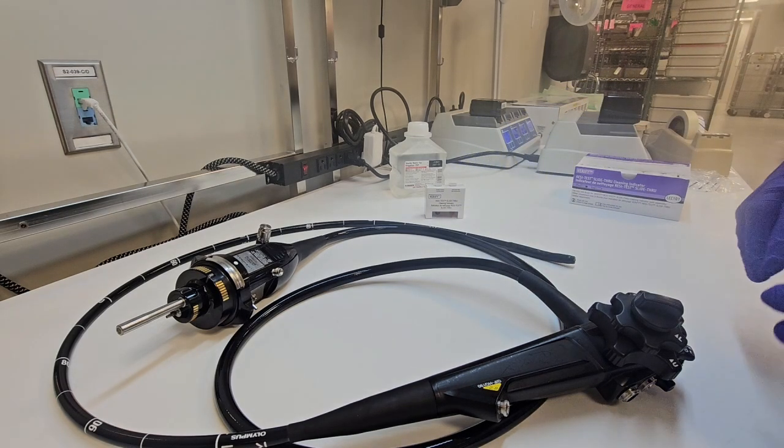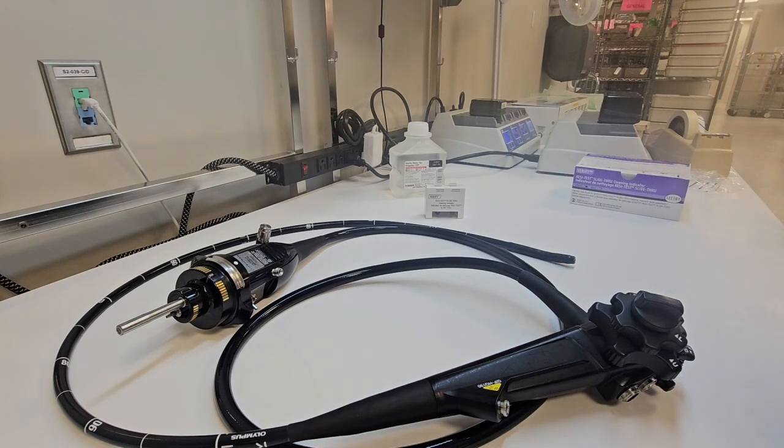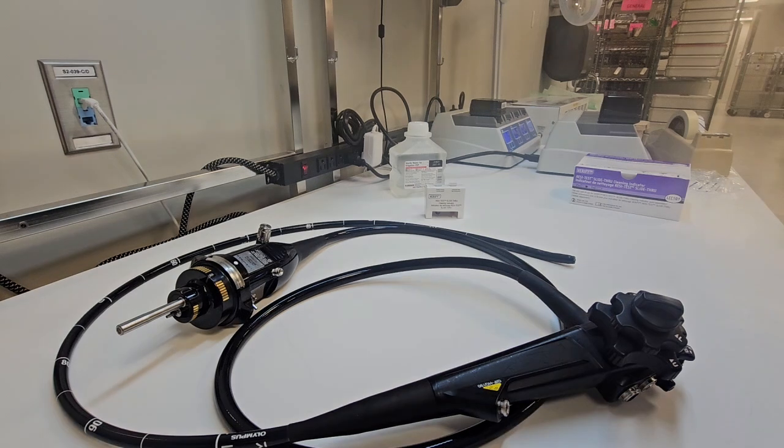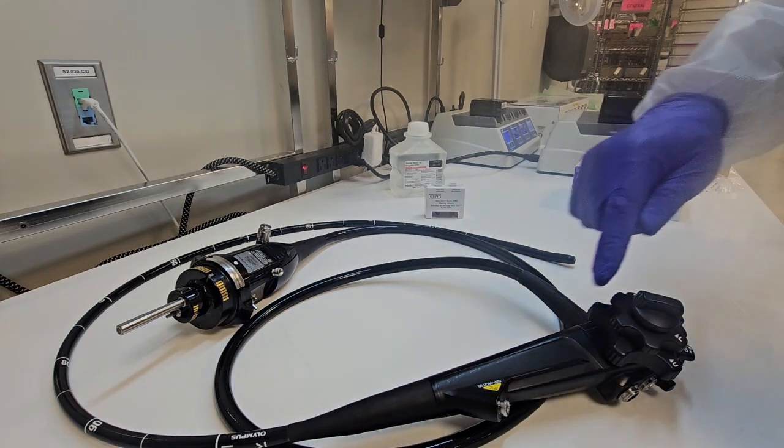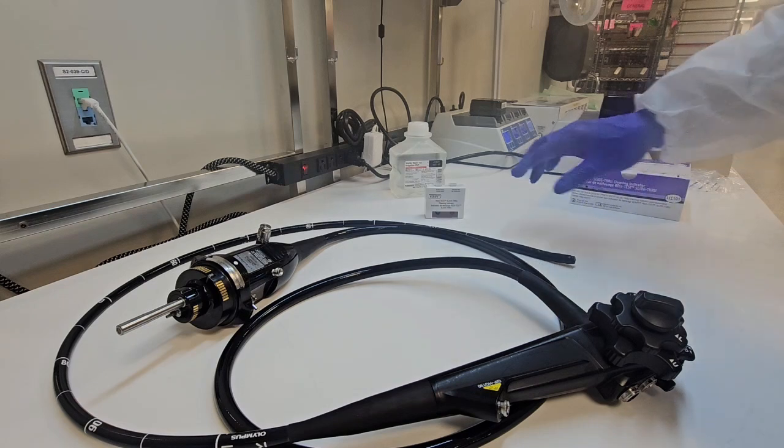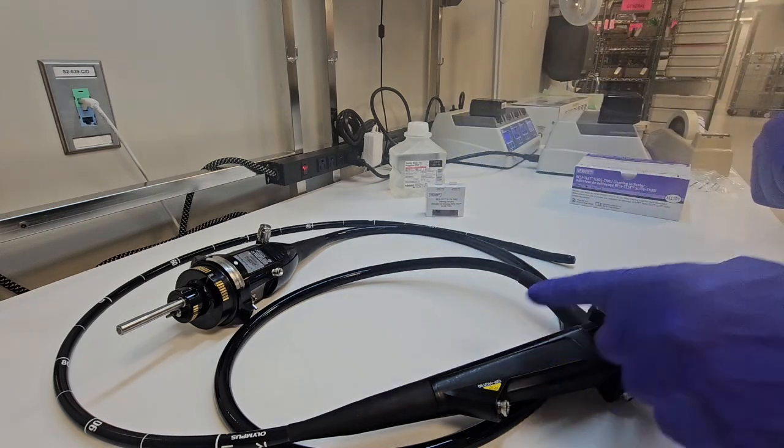That squeegee came through. The test is negative. So I did a good job in cleaning the internal surfaces of my flexible endoscope. Am I done? In my opinion, no. You tested the internal surfaces. Don't we clean the external surfaces of the scope as well?